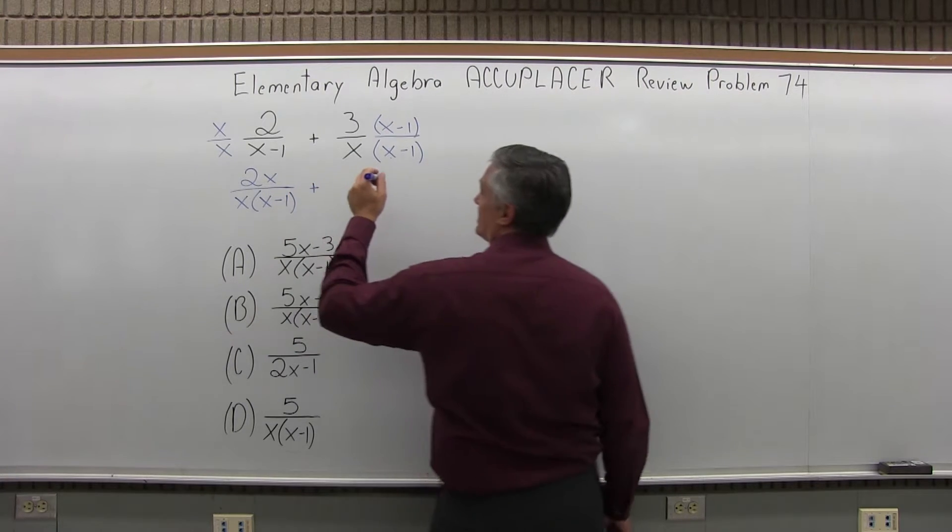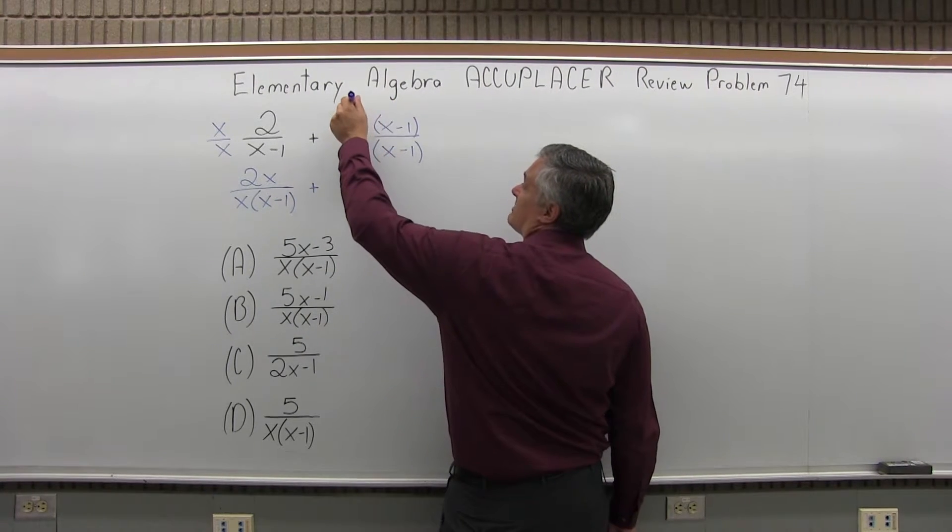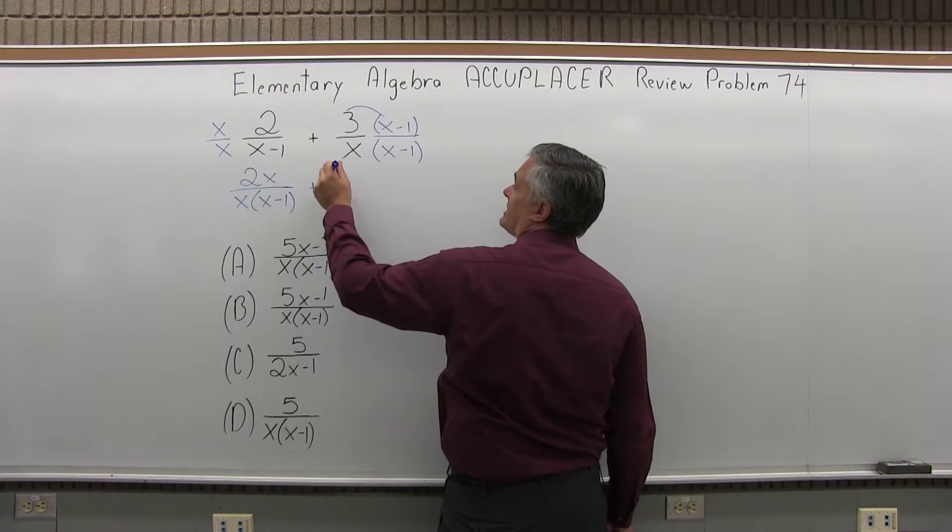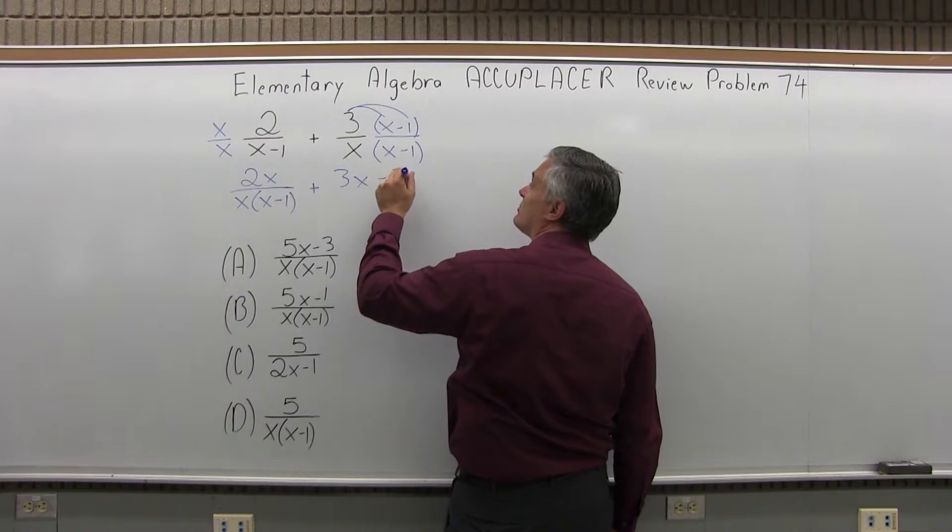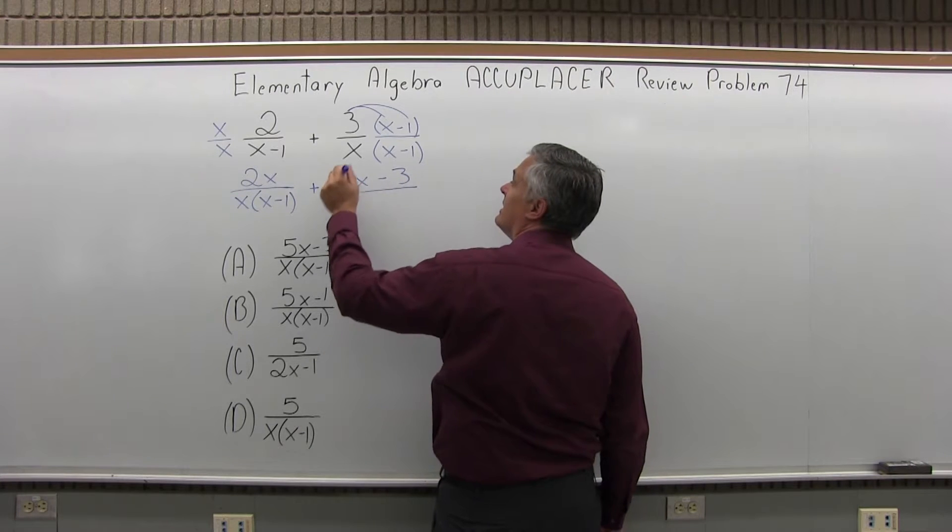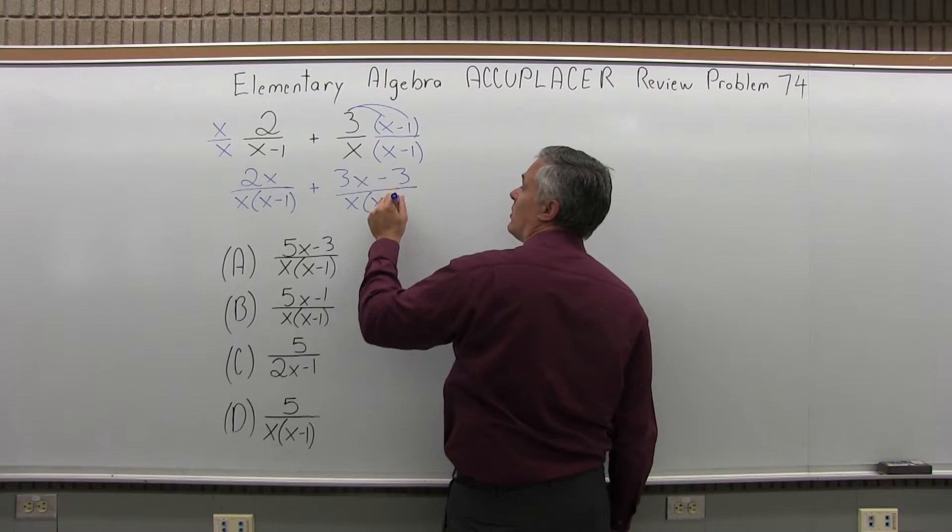Plus the second fraction, I have 3 times x minus 1 on the top. So 3 times x is 3x, and 3 times minus 1 is minus 3, right? Pay attention to the sign. And then the bottom, x times x minus 1.